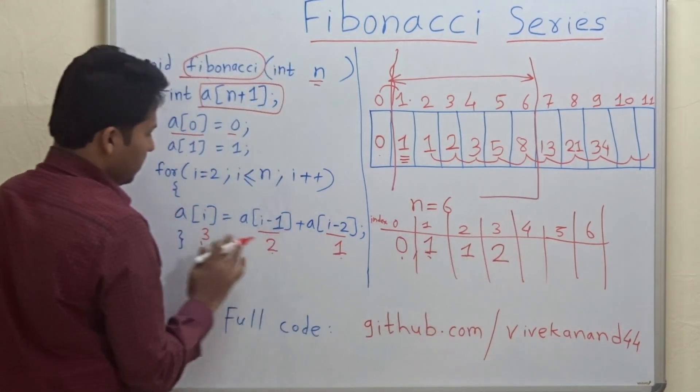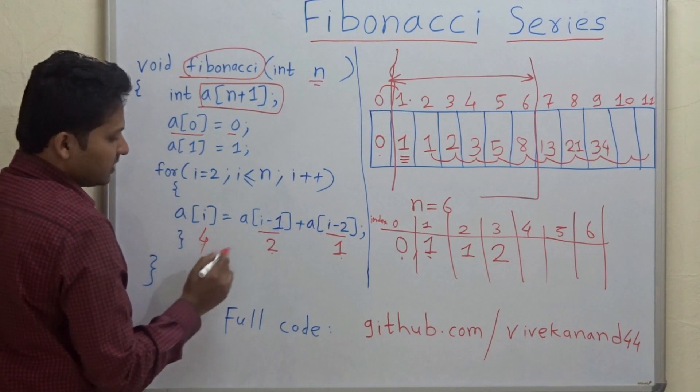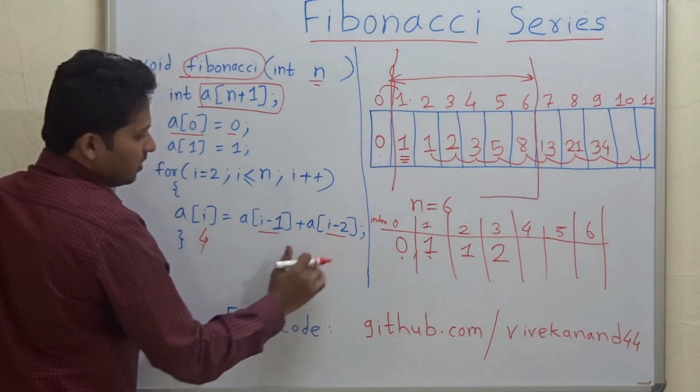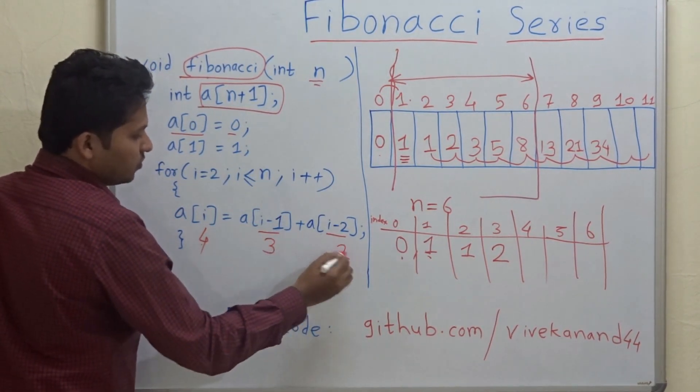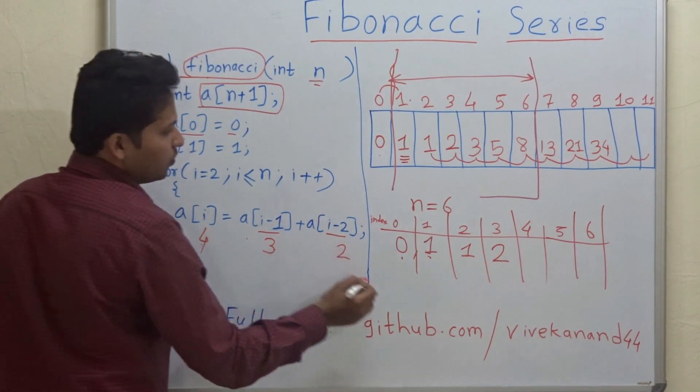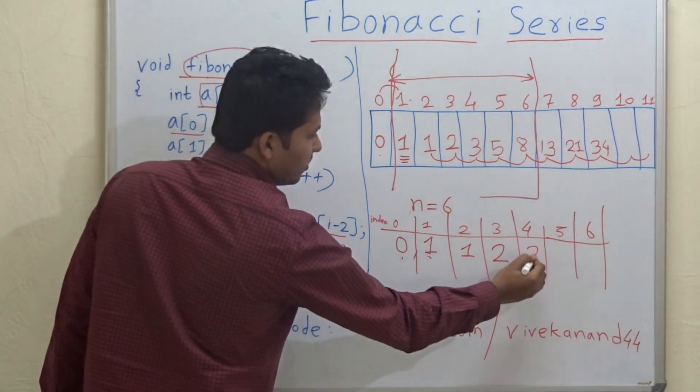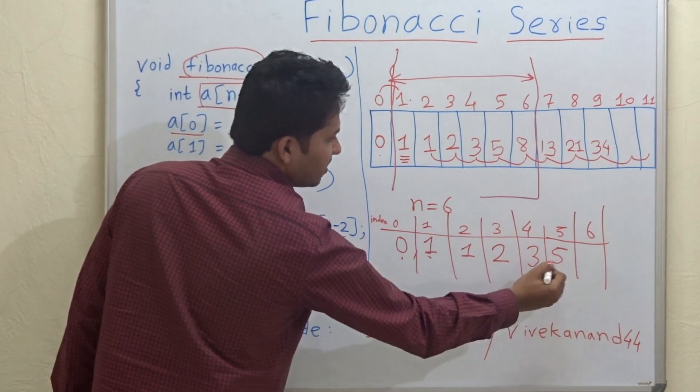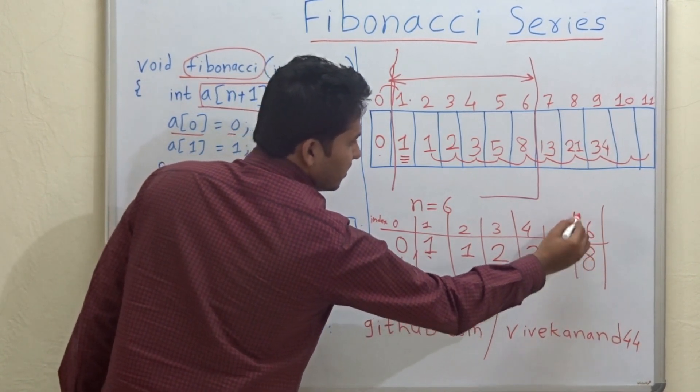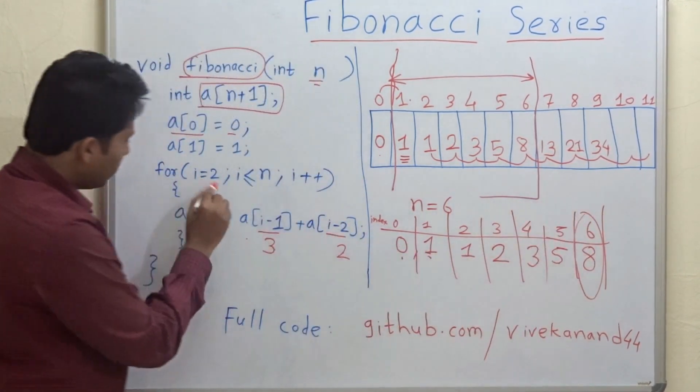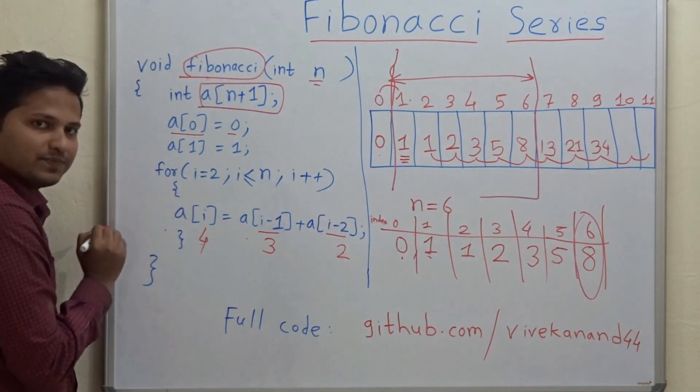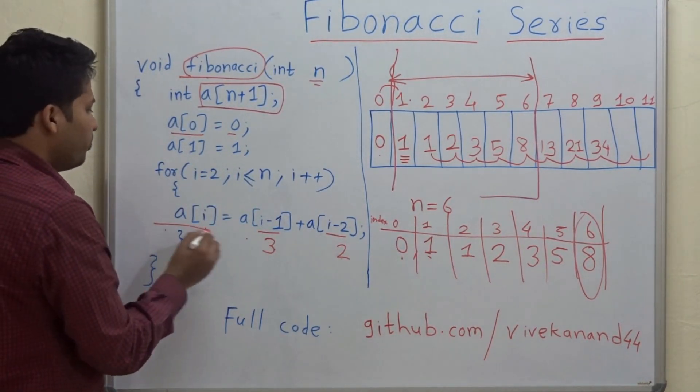Then 2 plus 3 equals 5, and 3 plus 5 equals 8. So this is the end of this for loop, and then we have to print this array.